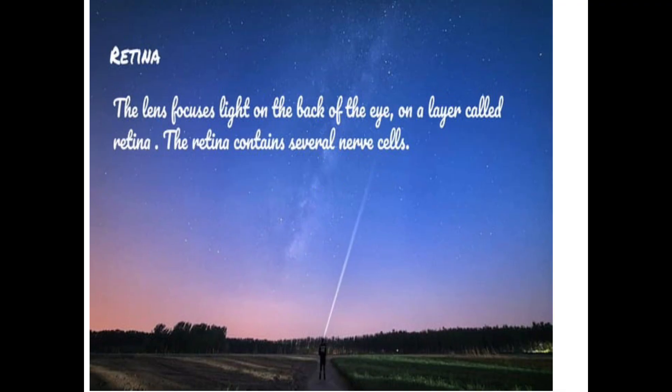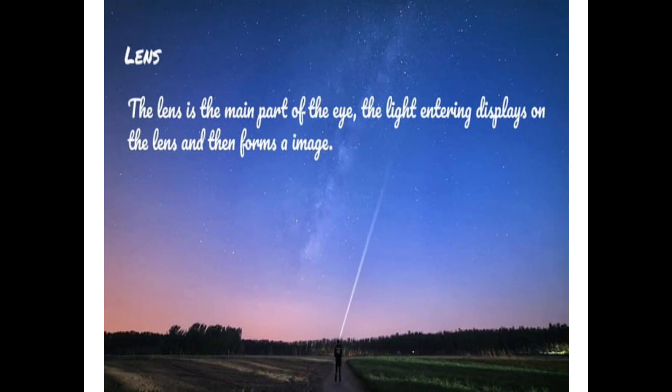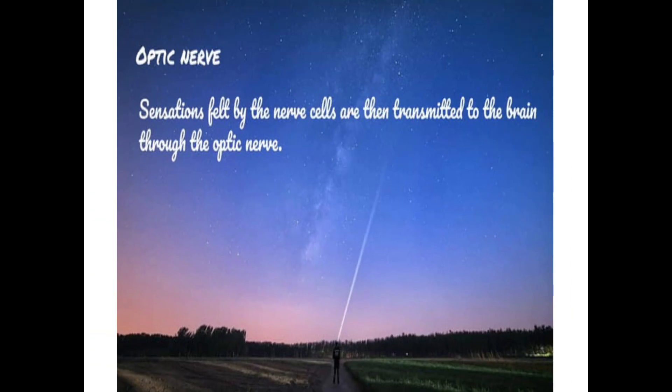Lens and retina. The lens focuses light on the back of the eye on a layer which is called retina. The retina contains several nerve cells. Optic nerve: sensations felt by the nerve cells are then transmitted to the brain through the optic nerve.